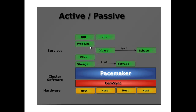Then you can have some web servers, some database servers, some file servers that are distributed over multiple hosts to distribute the load, and in the instance of a failure on one of the hosts you can basically have the service automatically migrated to one of the available hosts to make sure that these websites, databases and files are constantly accessible.